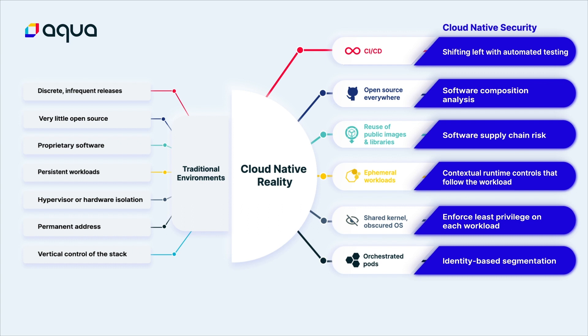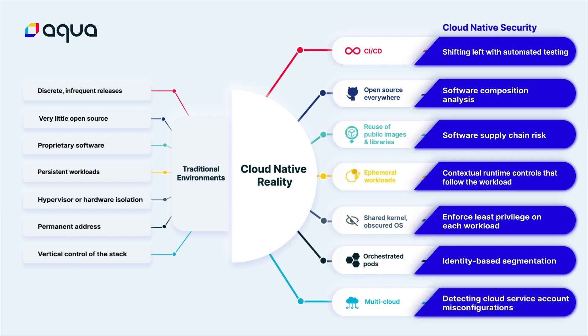Instead of having full vertical control of the infrastructure on which applications are run, organizations are now using multiple cloud providers to create cost efficiencies and avoid being locked in with one vendor. So instead of maintaining your own infrastructure, security now means checking the configurations of those providers.